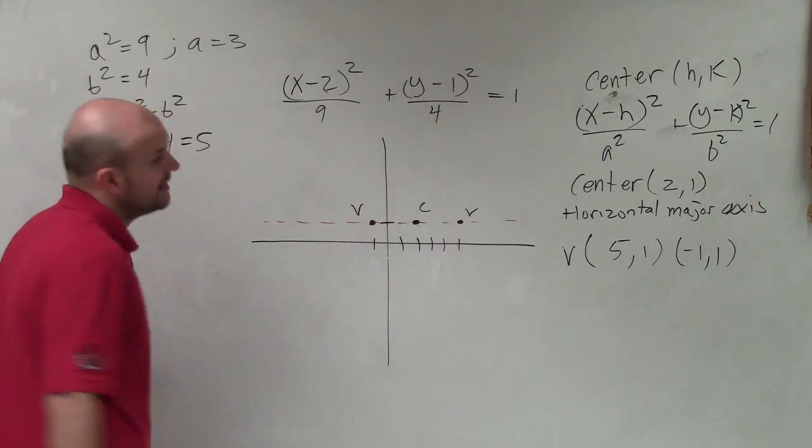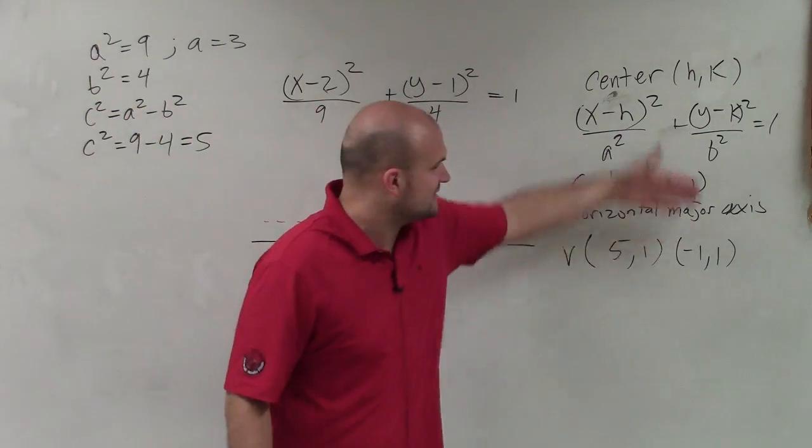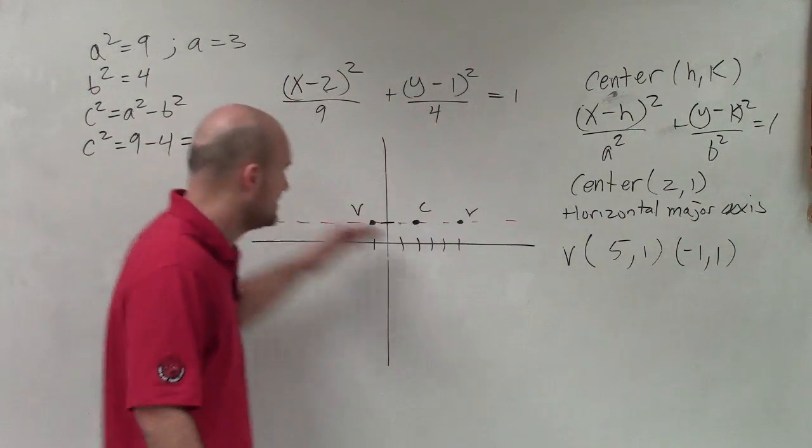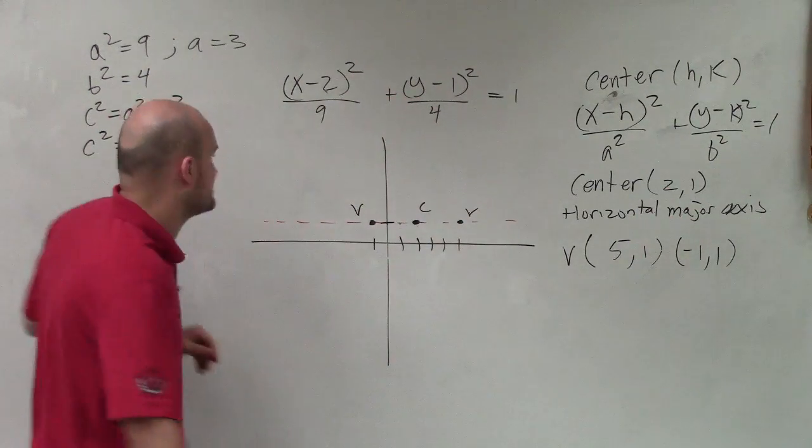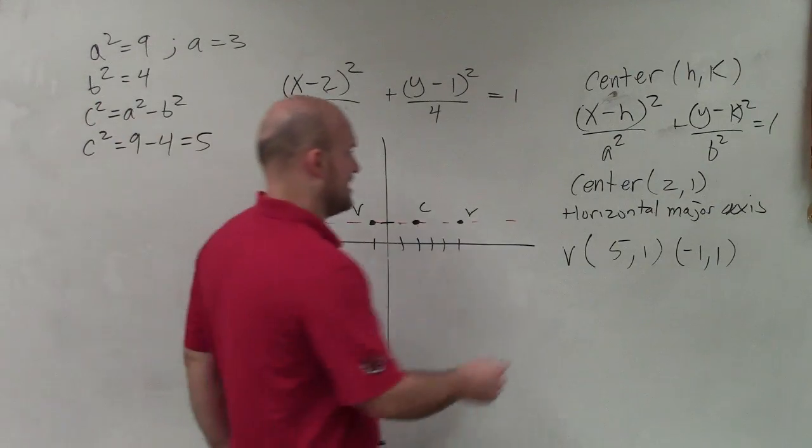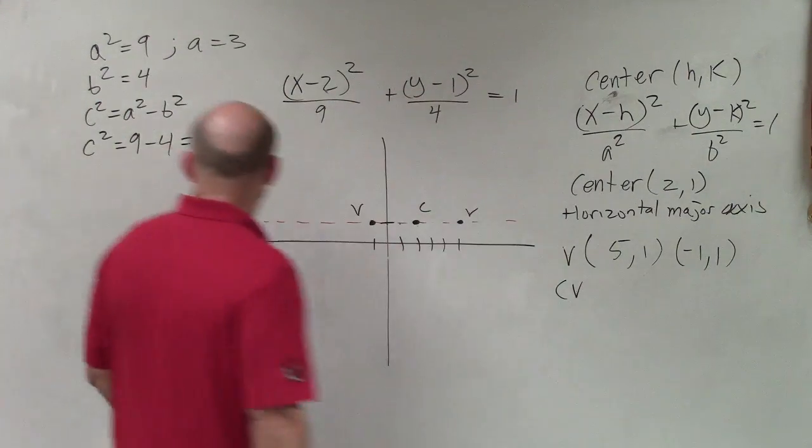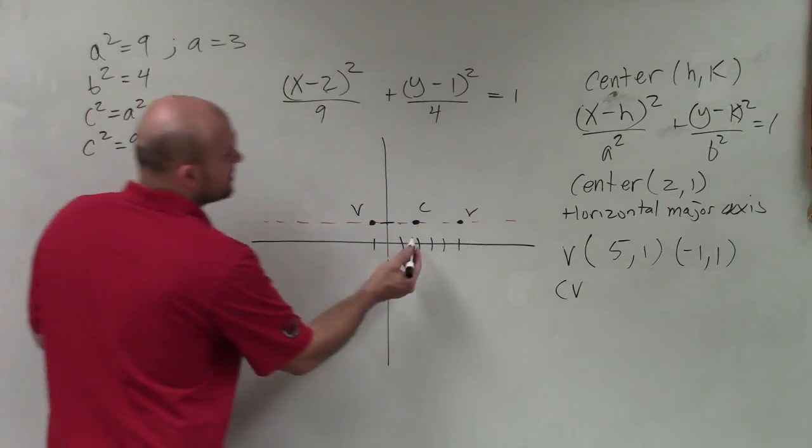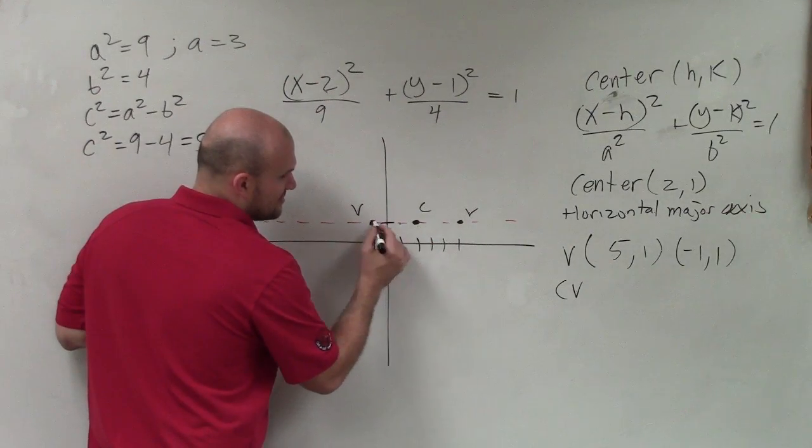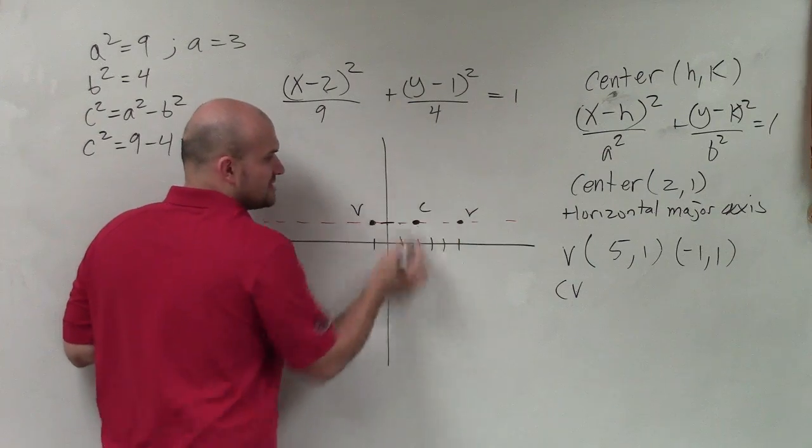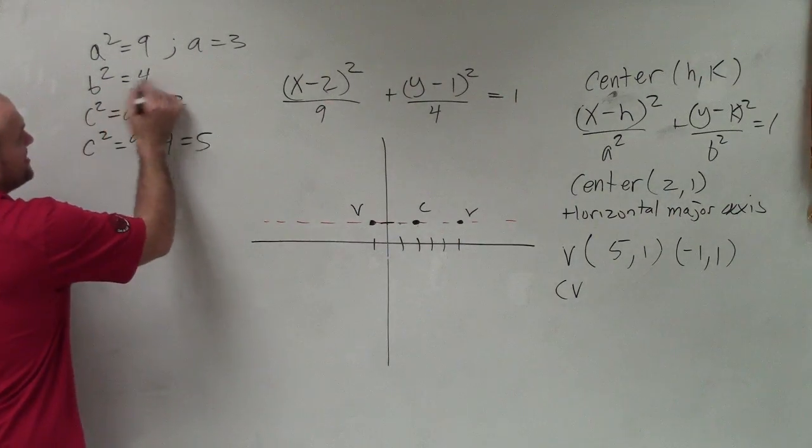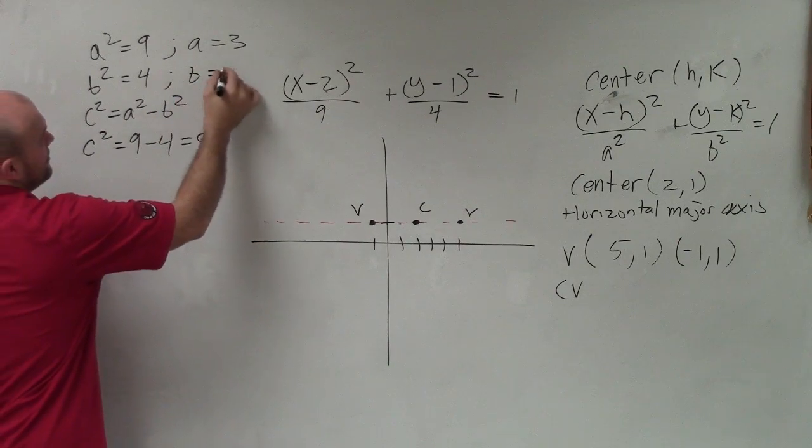One thing that's very important is notice that the center of the vertices as well as the foci are all going to have the same y-coordinate because they all lie on that major axis. The next thing we need to do is identify my co-vertices. So the co-vertices, there's going to be a distance of b from there. But if this is the major axis, then my minor axis is going to be perpendicular. So now I'm going to be going up and down for my co-vertices. If b² = 4, I can say b = 2.